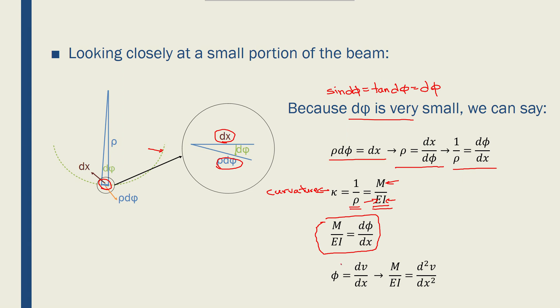We also know that phi, the angle of rotation, is equal to dv over dx. v is displacement in the y direction, and x again is the distance along the length of the beam.